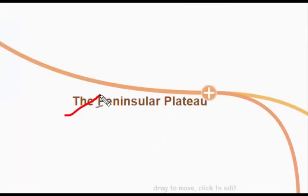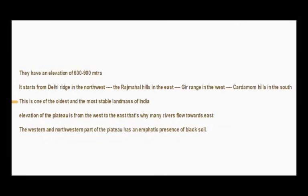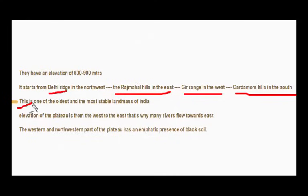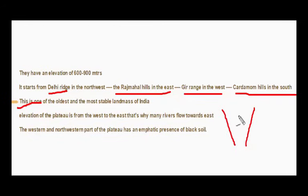Let's move on to the peninsular plateau. The peninsula plateau has an elevation of 600 to 900 meters. It starts from the Delhi Ridge in the northwest to the Rajmahal Hills in the east, and from the Gir Range in the west to the Cardamom Hills in the south. The peninsular plateau is the oldest and most stable landmass of India. Elevation of the plateau is higher in the west than in the east, which is why many rivers flow towards the east into the Bay of Bengal. The western and northwestern part of the plateau has an emphatic presence of black soil.